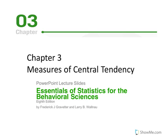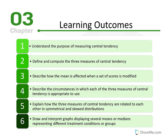Chapter 3: Measures of Central Tendency, Part 1. The learning objectives for this chapter are: we will understand the purpose of measuring central tendency, define and compute the three measures — the mean, the median, and the mode — and describe how the mean is affected when a set of scores is modified, and describe the circumstances in which each of the three measures is appropriate to use.